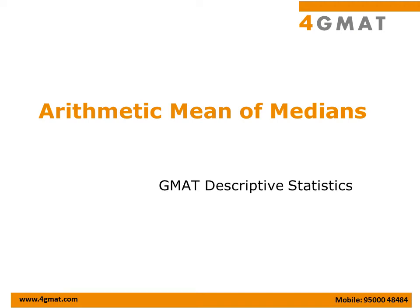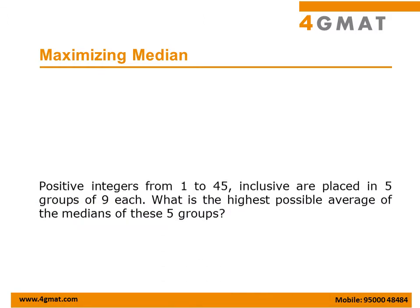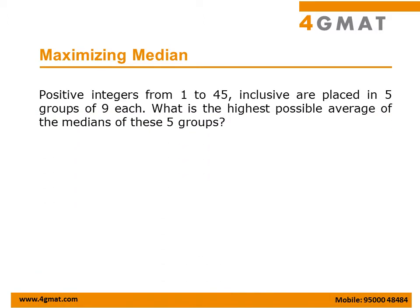This is a descriptive statistics question. Our idea is to find the arithmetic mean of medians. The question asks us to maximize the medians. Positive integers from 1 to 45 inclusive are placed in 5 groups of 9 each. What is the highest possible average of the medians of these 5 groups?